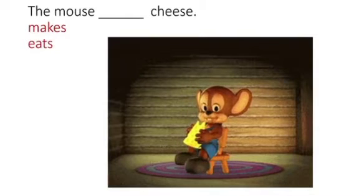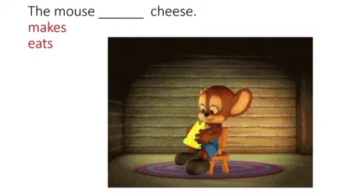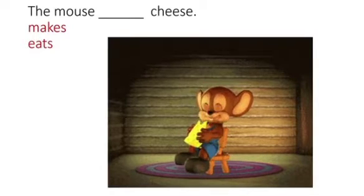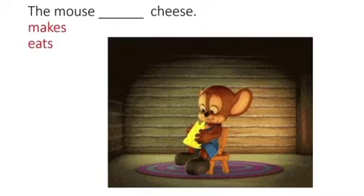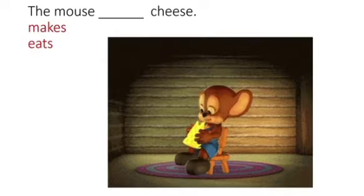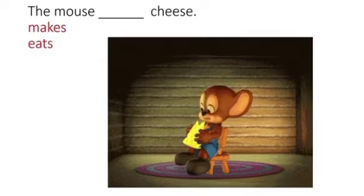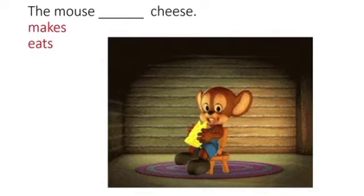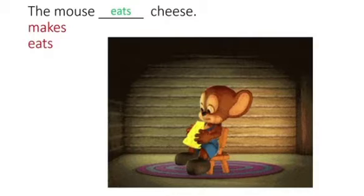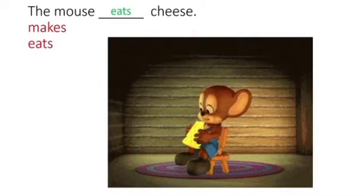One mouse is there in front of you. What will be the correct word for this mouse action? This mouse is doing some action. You have to tell me the correct action word. The mouse blank cheese. The correct action word is E-A-T-S, eats. The mouse eats cheese.